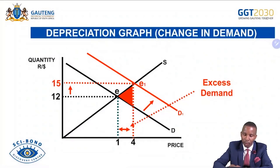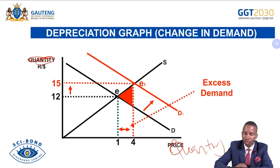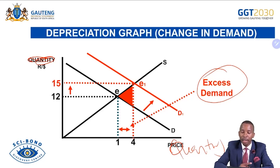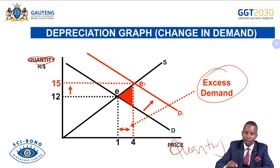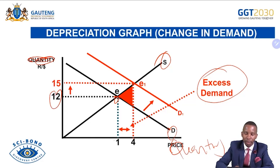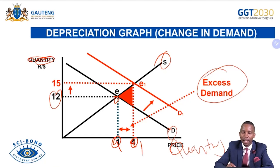For the depreciation graph — market for rand versus dollars: original supply and demand meet at equilibrium with quantity Q and price at 12, meaning we afford one dollar with 12 rand. The demand for South African rand increases in the foreign market, increasing to D1. With demand increasing more than supply, there is excess demand, which means the rand will depreciate — we will now need more rand to afford a dollar than the previous 12 rand.